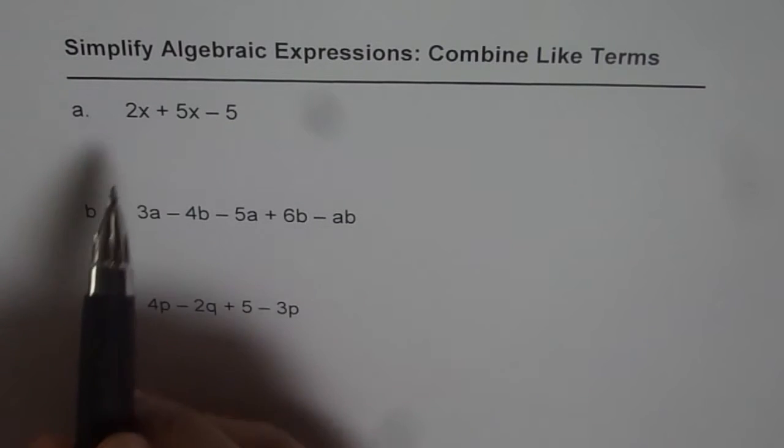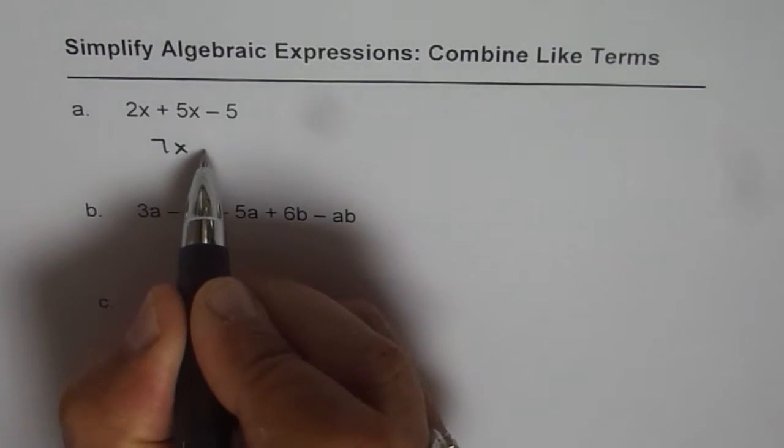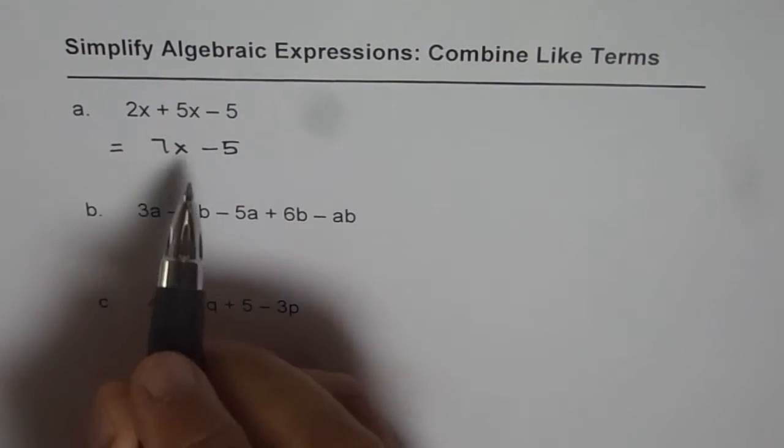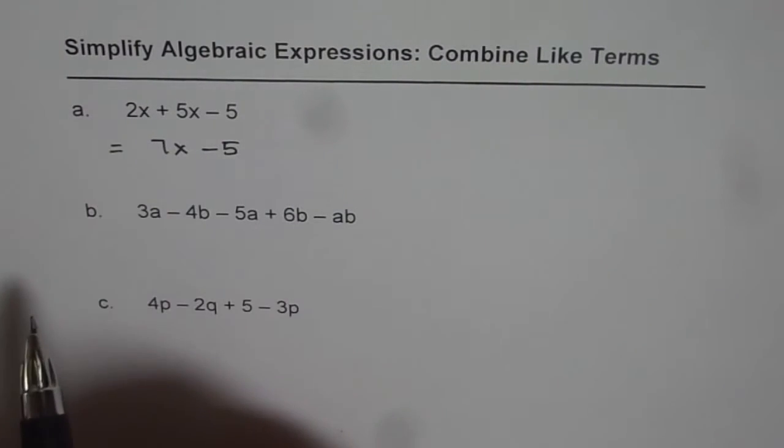Combining like terms, we can write this expression as 7x minus 5. The given expression equals 7x minus 5. Since 2x and 5x are like terms, we can combine them, and that is how we can simplify it.